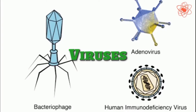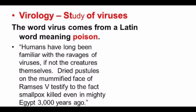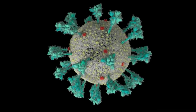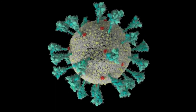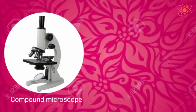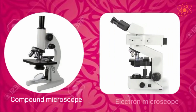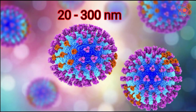Now, viruses. Singular, it is known as virus. The word virus means poisonous liquid. Viruses are extremely tiny organisms that cannot be seen with a simple or compound microscope. They can only be observed by a special microscope called an electron microscope. Their size ranges from 20 to 300 nanometers.